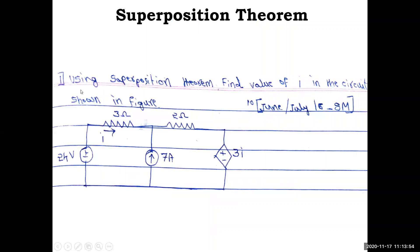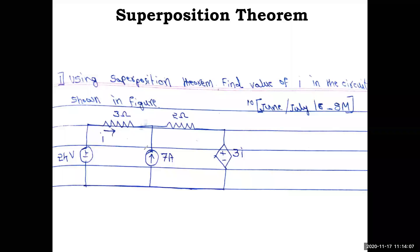The first problem: using superposition theorem, find the value of i in the circuit shown in the figure. Draw the network — you have 3 ohm, 2 ohm, 7 amps, 24 volt, and 3i. You have to find the current i in this branch.